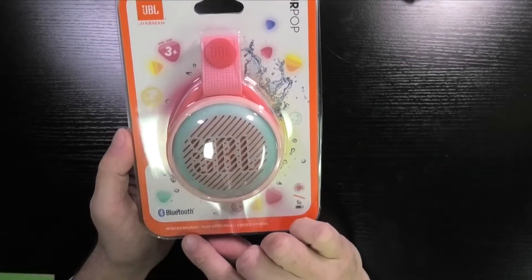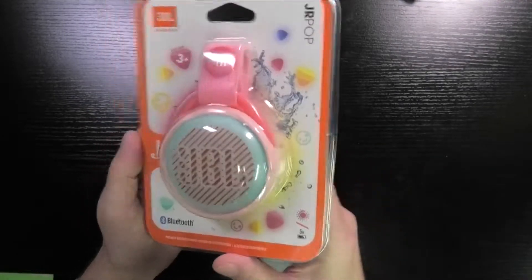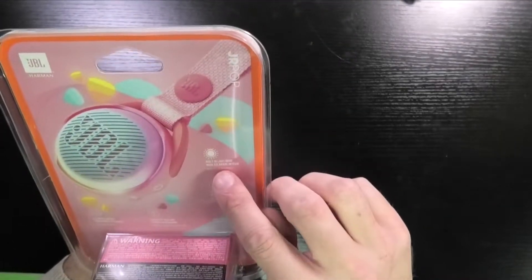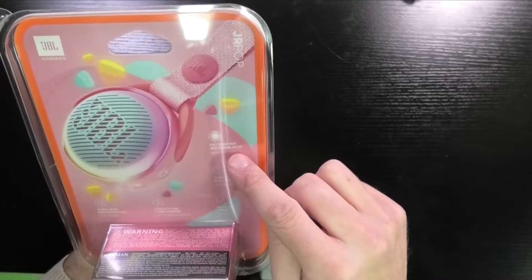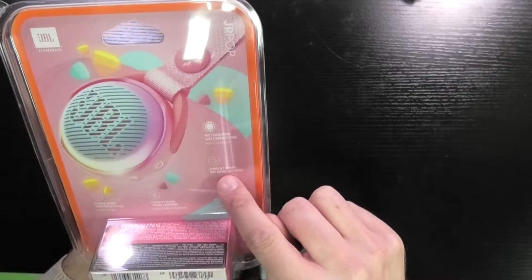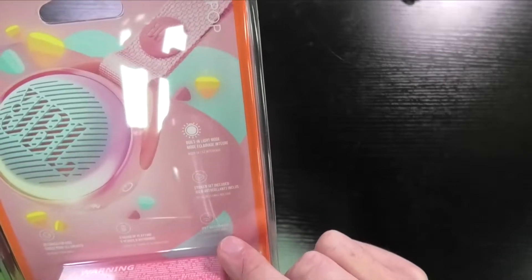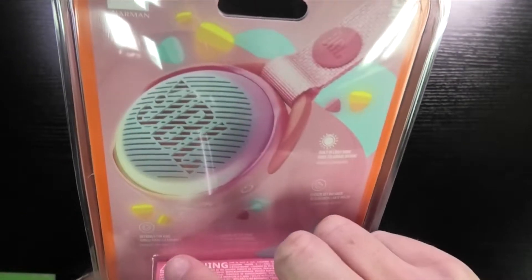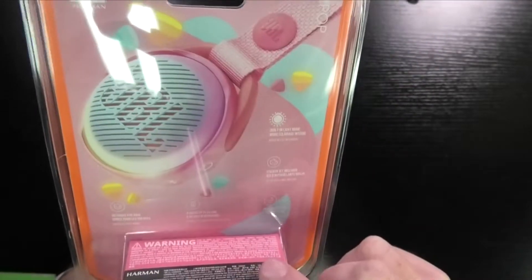So you see here the Junior Pop portable Bluetooth speaker for kids. On the back side here, you can see all the features: the built-in nightlight mode, it comes with stickers, it is IPX7 waterproof, and has 5 hour playtime.